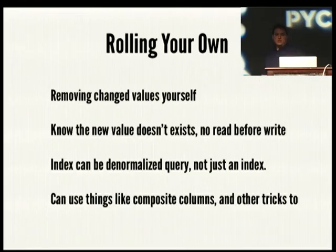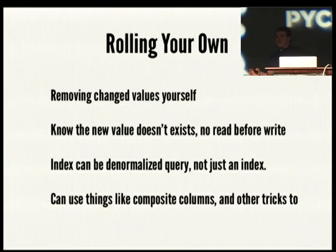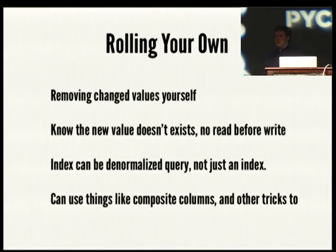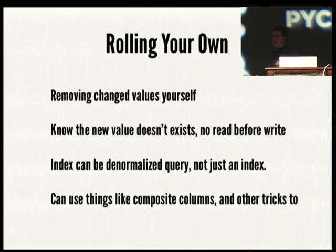You can also roll your own indices. Use the batching interfaces to write data to two different column families so you don't have to do a read-before-write if you know the data is new. You can also denormalize your queries so that when you read from the index row, you don't have to also go read the main column family — the data you need is already there.